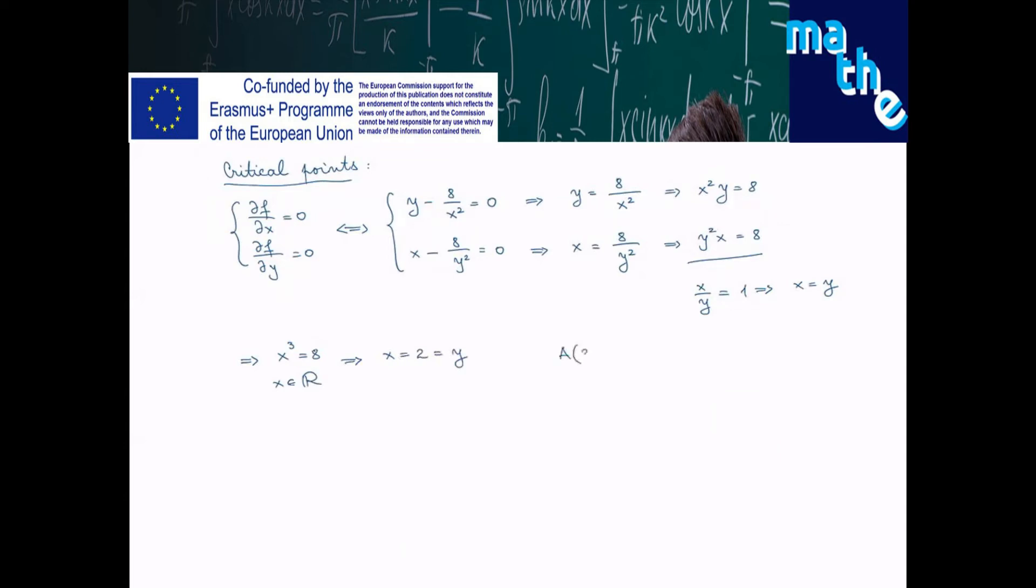So the point a having the coordinates (2,2) is the only critical point.